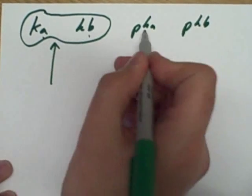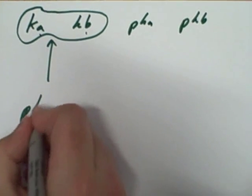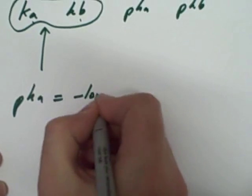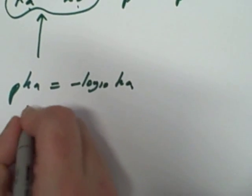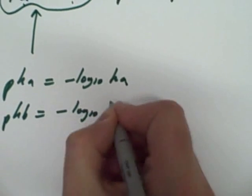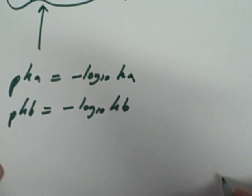So if we log Ka, we'll get the pKa. And the formula is dead easy. pKa equals minus log to the base 10 of your Ka value. In the same way, pKb will equal minus log to the base 10 of your Kb value. Easy.